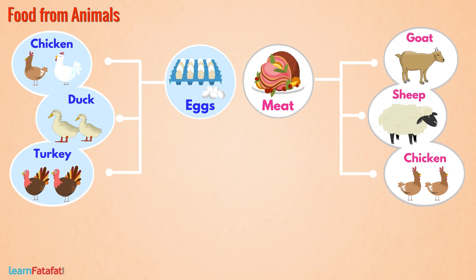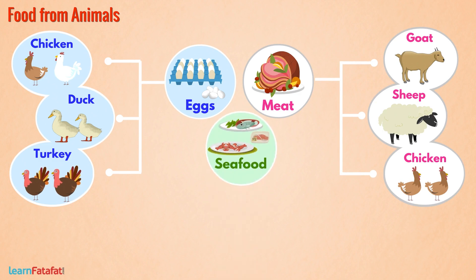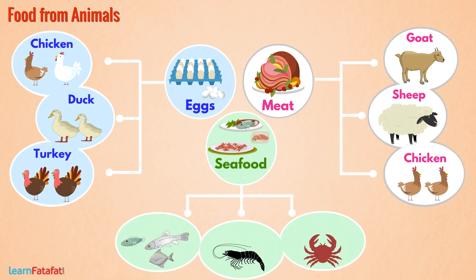Most of the population relies on seafood for their food. Seafood is obtained from fish, prawns, crabs, etc.